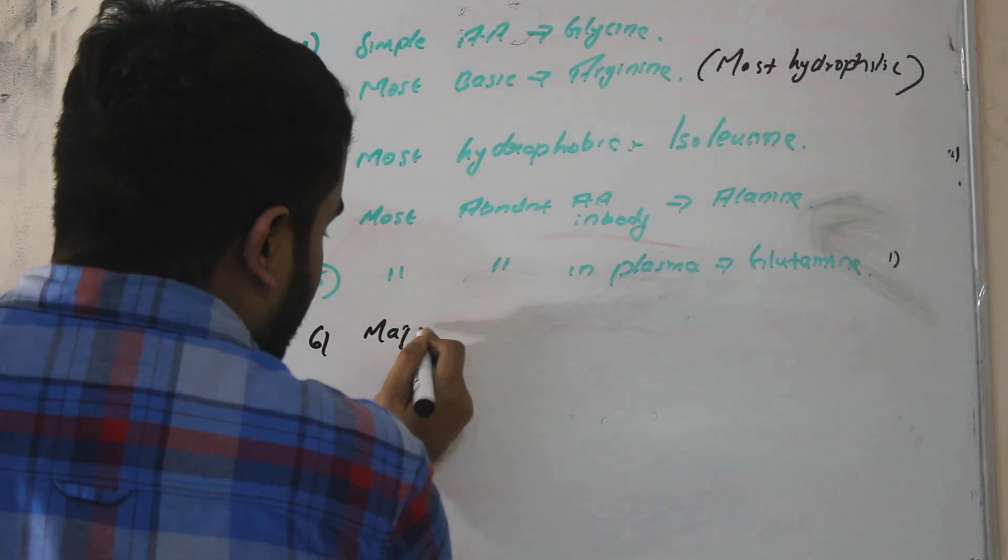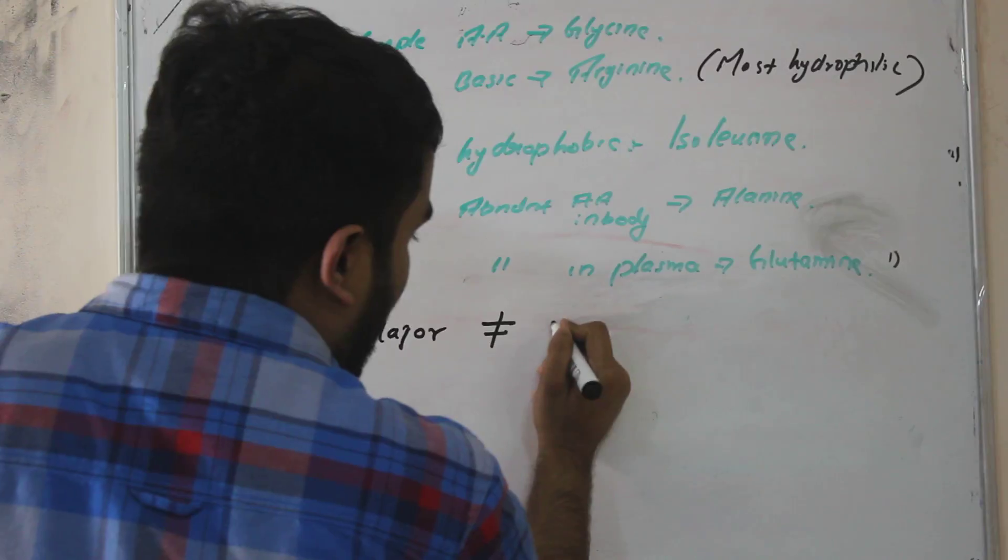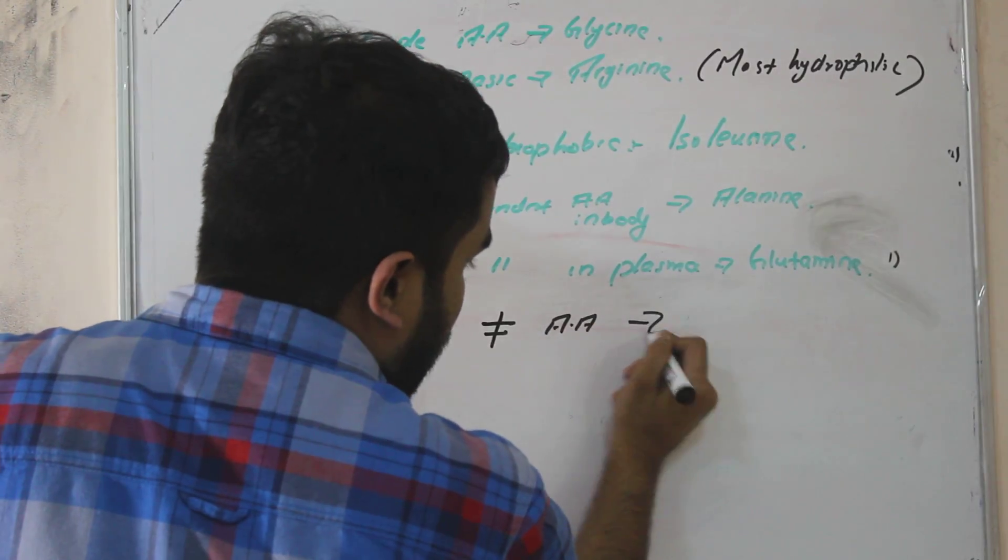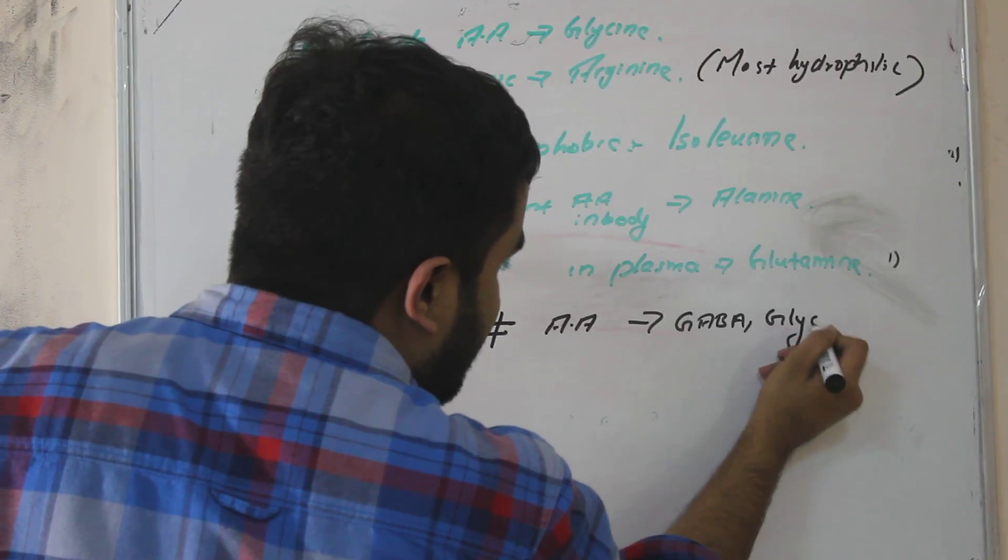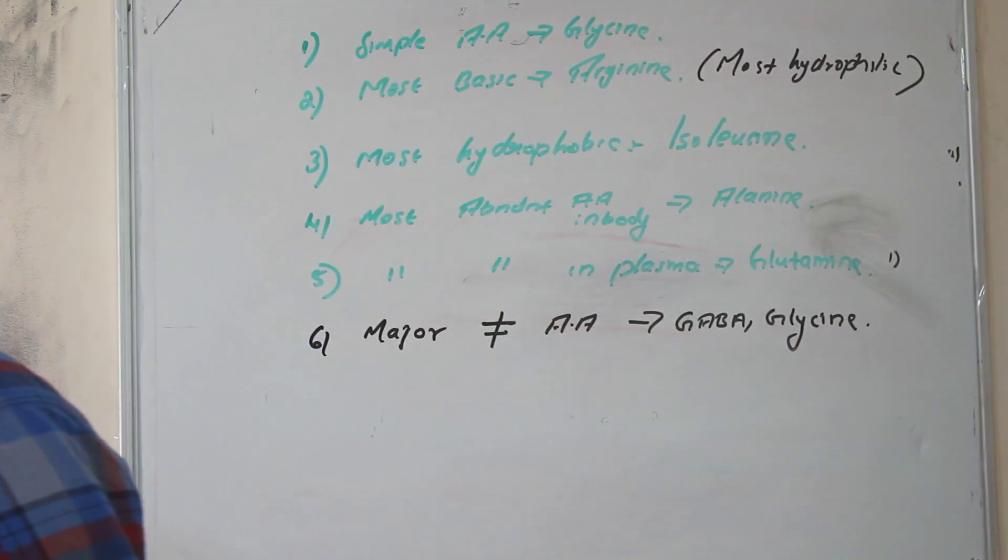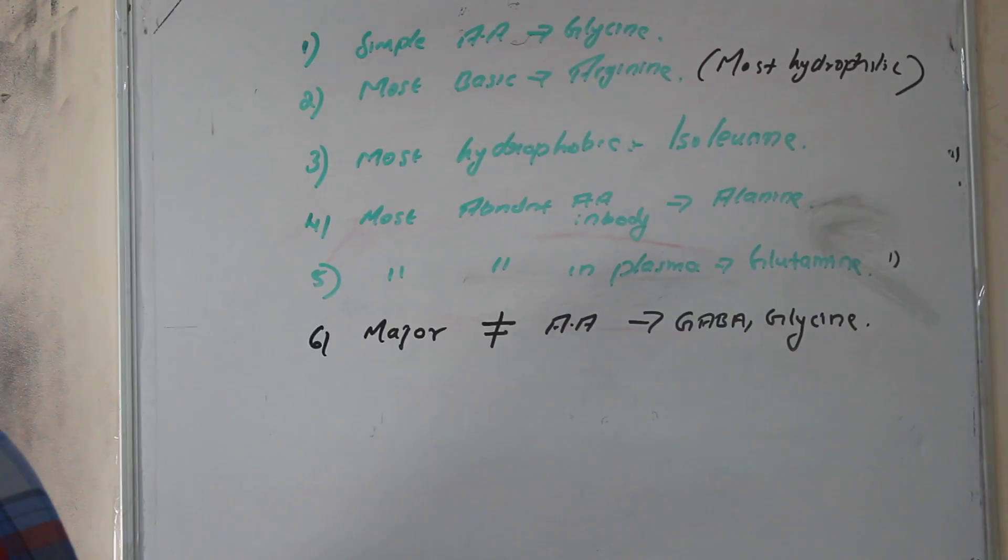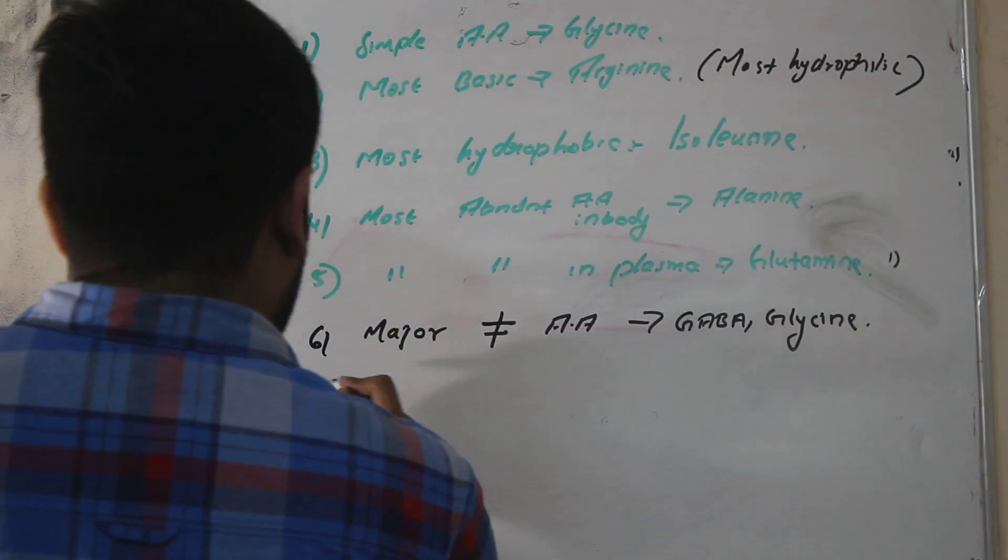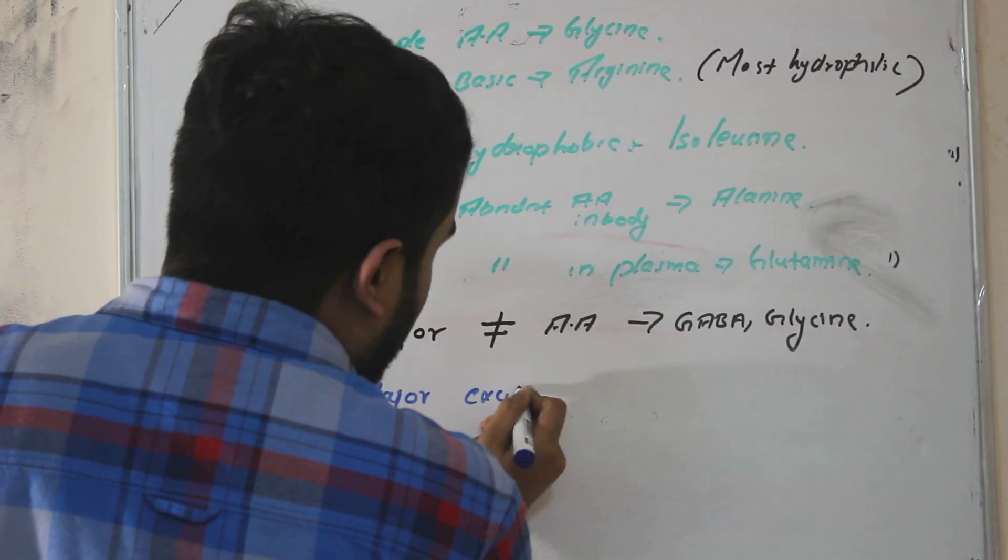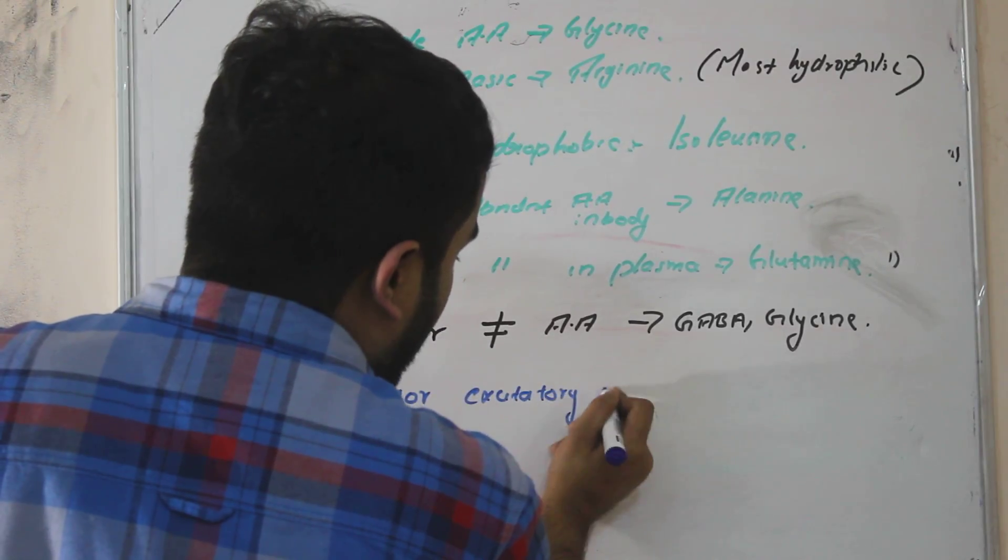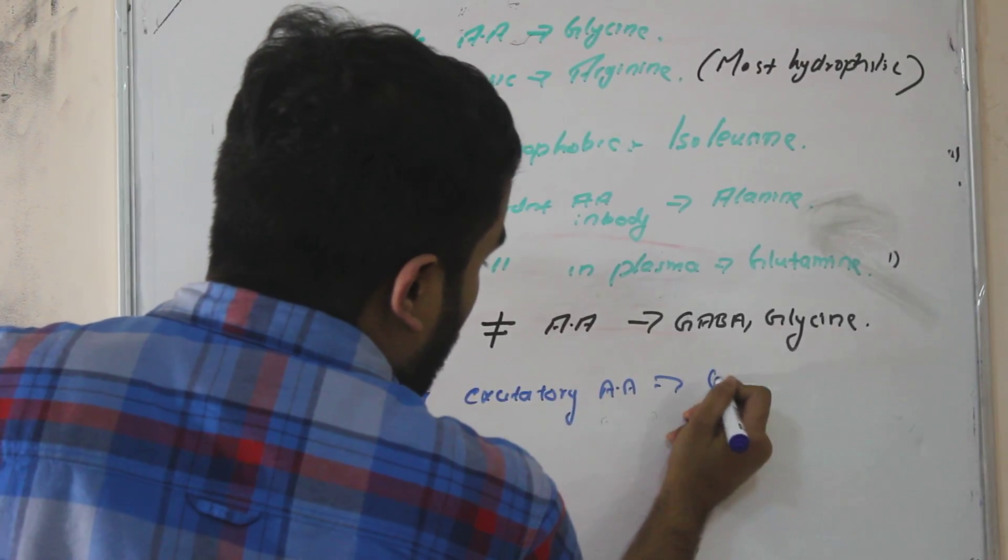Major inhibitory amino acid. What we have studied, one is GABA, the other one is glycine. One is GABA and the other one is glycine. Then major excitatory amino acid. What is that? Glutamate.